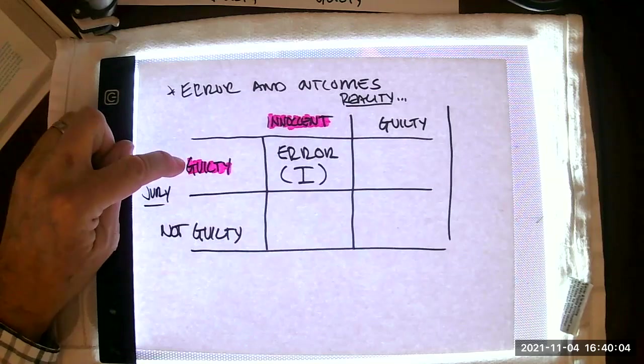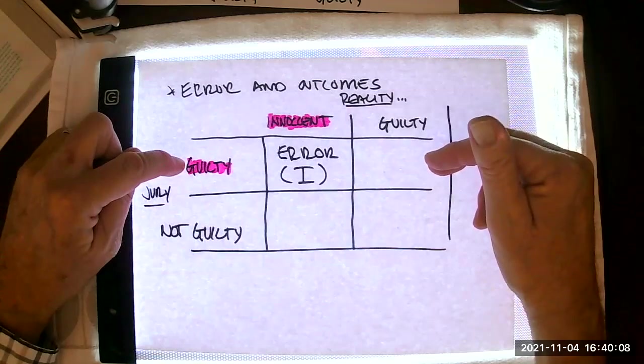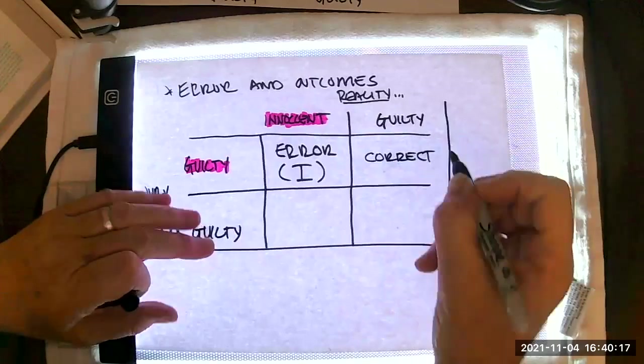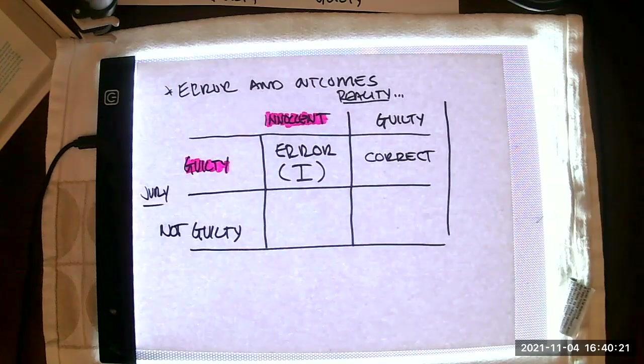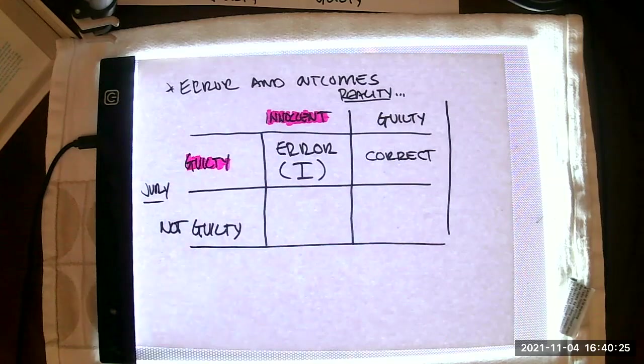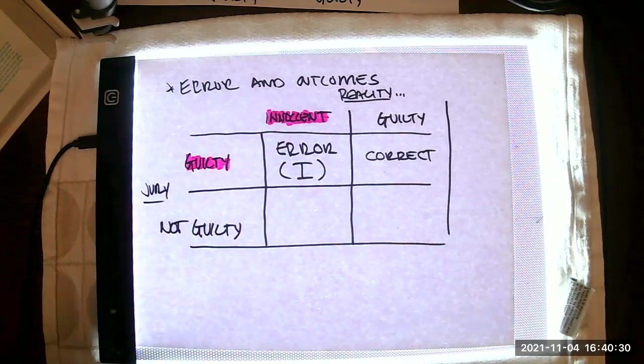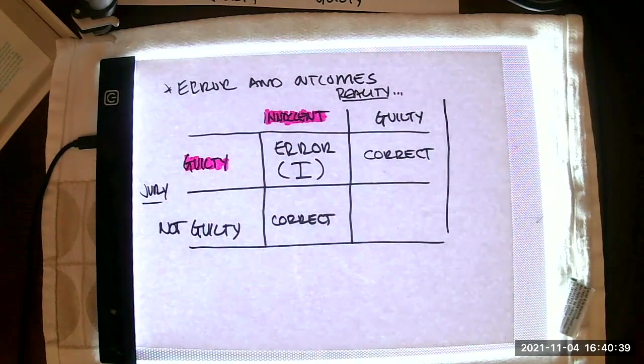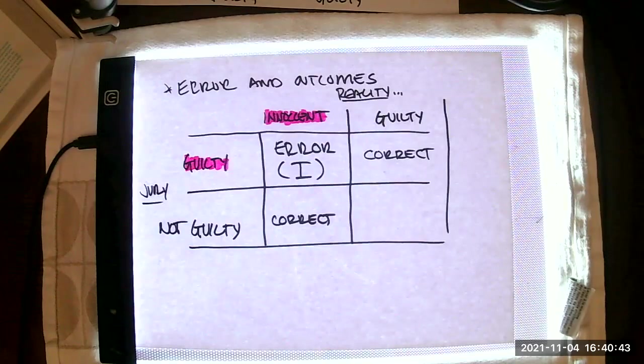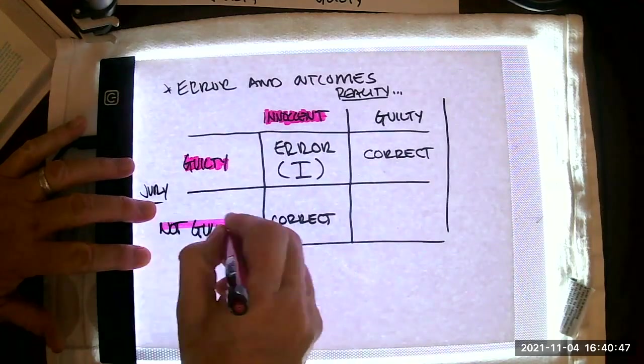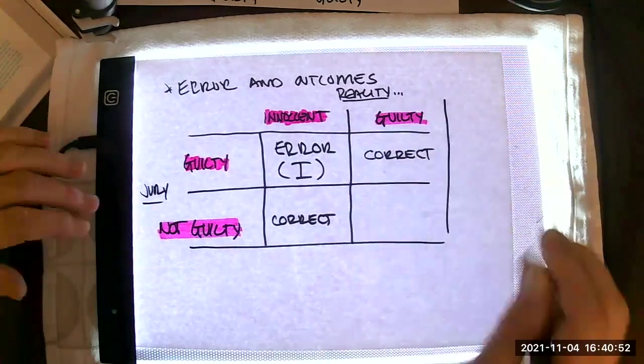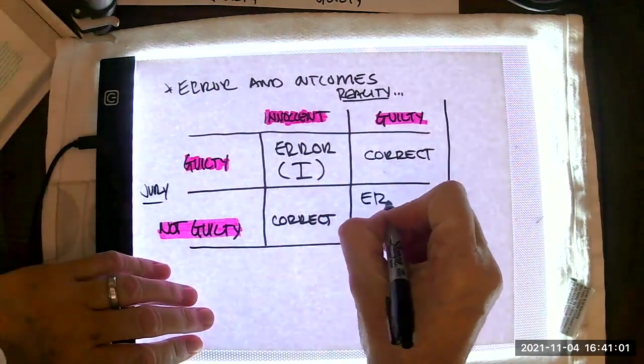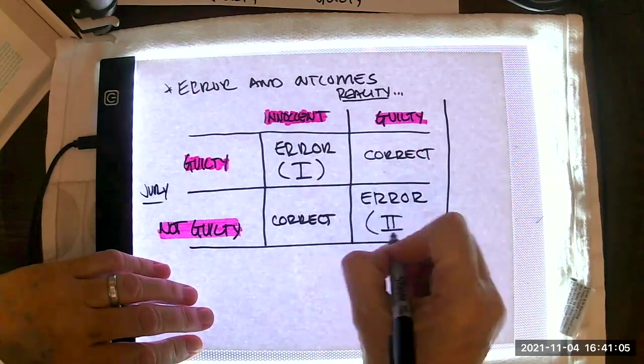On the other hand, if the jury comes back with a guilty verdict and the person really did commit the crime, then the verdict is correct. Maybe the jury comes back with not guilty and the person is innocent. Finally, the jury might come back with not guilty, and yet the person in question really did commit the crime. Here again, we have some sort of error and I'm going to call that the type two error.